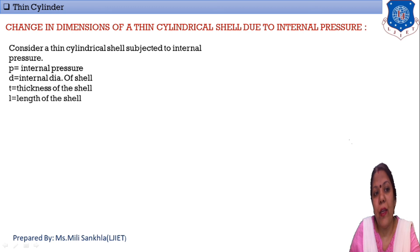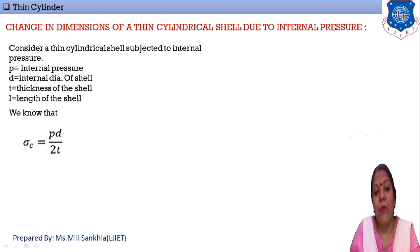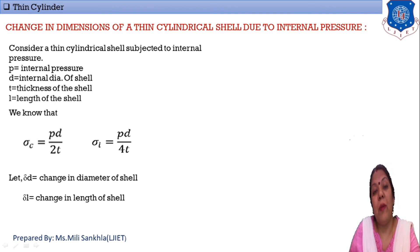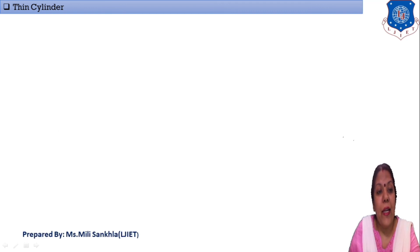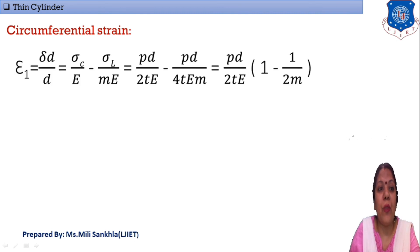Here again: p is internal pressure, d is internal diameter, t is thickness, and l is length of the shell. We know σc = pd/2t (hoop stress) and σl = pd/4t (longitudinal stress). ΔD is change in diameter of the shell and ΔL is change in length of the shell.